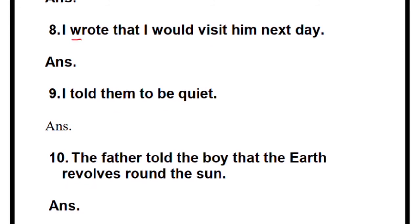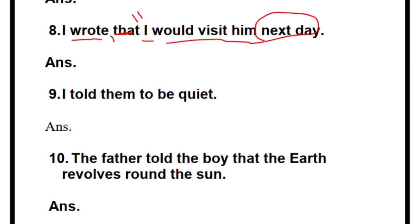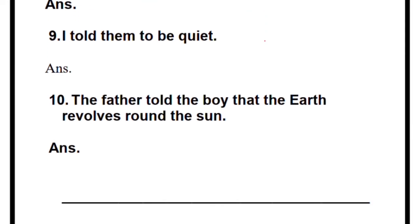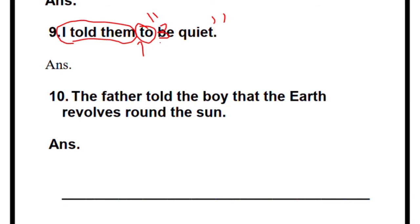Number eight: 'I wrote that I would visit him next day.' Write 'I wrote,' add a comma, remove 'that,' open quotes. 'I' remains 'I.' 'Would visit' becomes 'will visit.' 'Next day' becomes 'tomorrow.' So: 'I wrote, I will visit him tomorrow.' Number nine: 'I told them to be quiet.' Write 'I ordered them' or 'I said to them,' add a comma, remove 'to,' open quotes, and write 'Be quiet' with capital B.